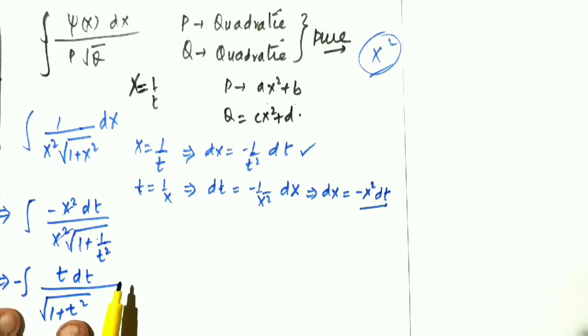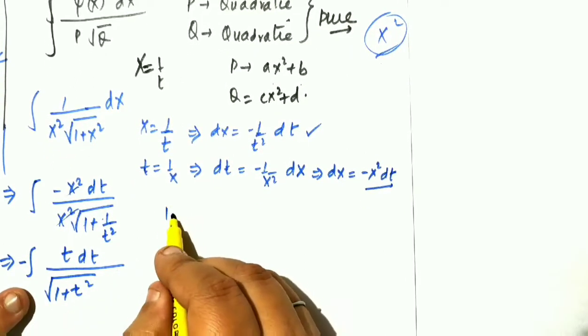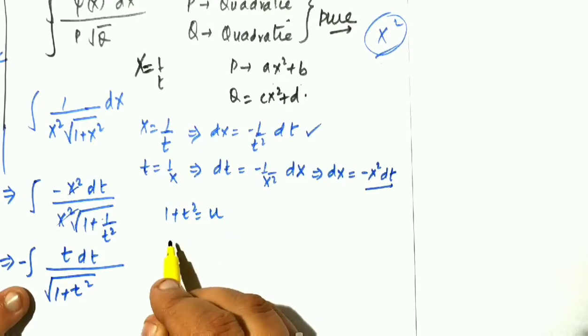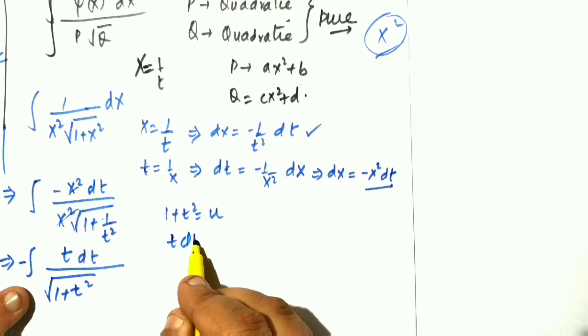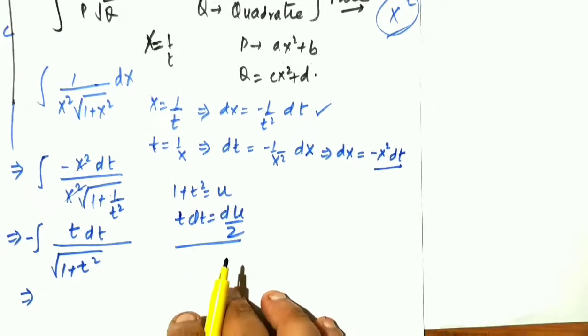And you know how to integrate this one. Just we have to use integration by substitution. So 1 plus t square is assumed to be u. Therefore t dt will be du by 2.